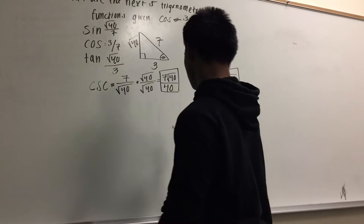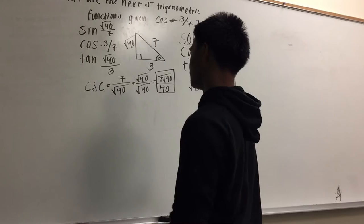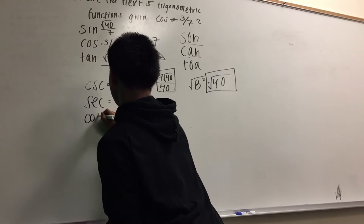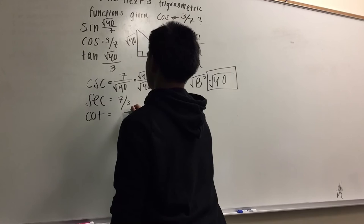Cosine is okay, because it doesn't have a square root as their denominator. So, secant, 7 over 3, and cotangent. Let's see, let's work this out.